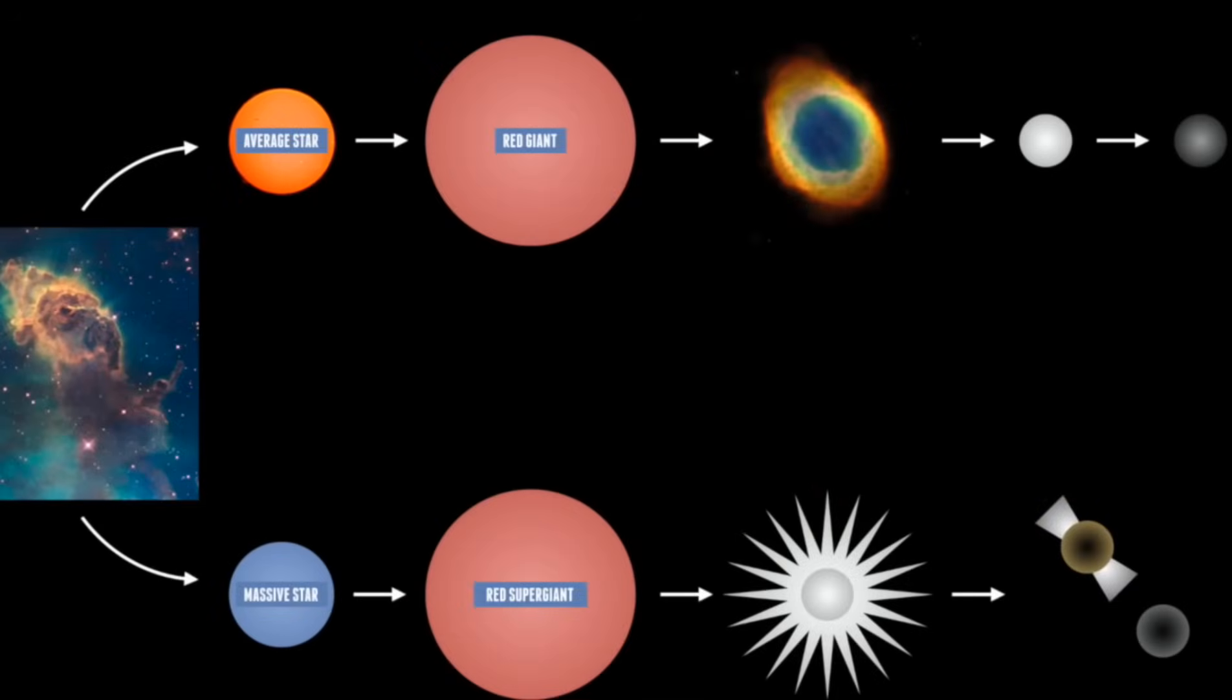A red star is cooler at its surface than a white star. Astronomers call these type of stars red giants, and they can become as large as the orbit of Mars or even Jupiter.